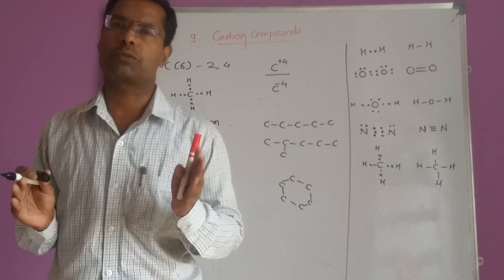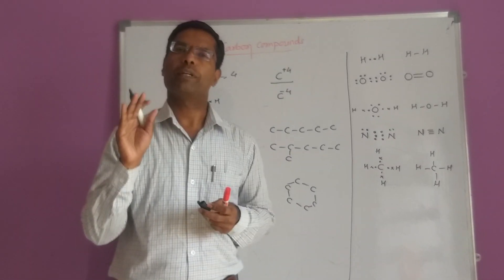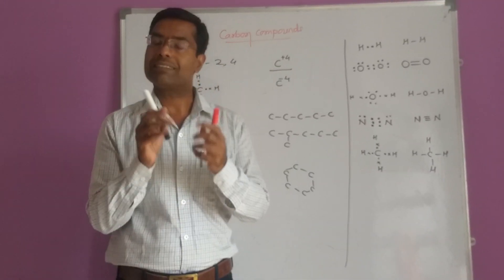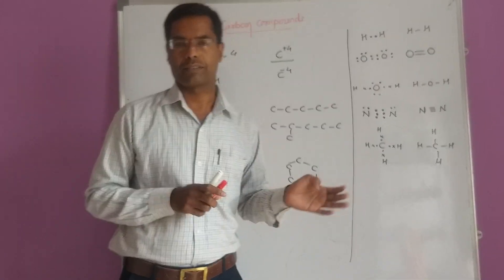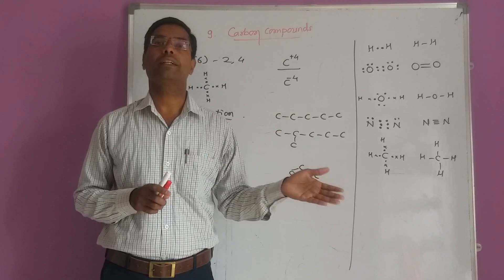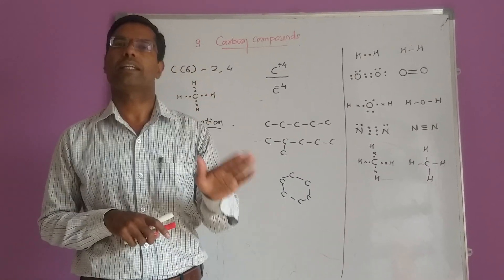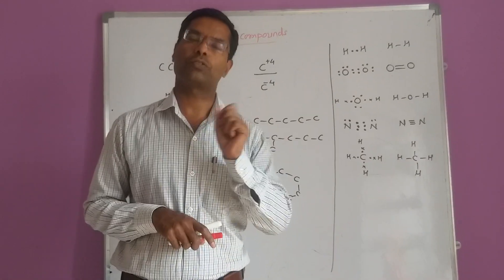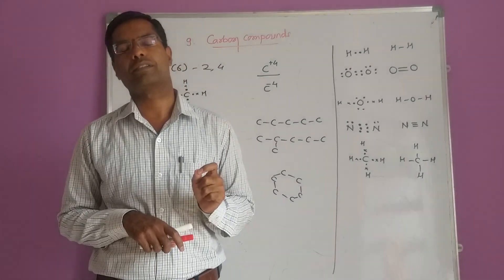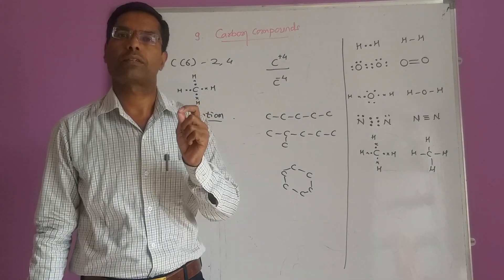Our carbon compounds are also covalent compounds. What are the properties of covalent compounds? They have low melting and boiling points because there is less attractive force between the molecules. Most covalent compounds have melting and boiling points below 300 degrees Celsius. Covalent compounds are generally insoluble in water but soluble in organic solvents. These are the very important properties of carbon compounds.